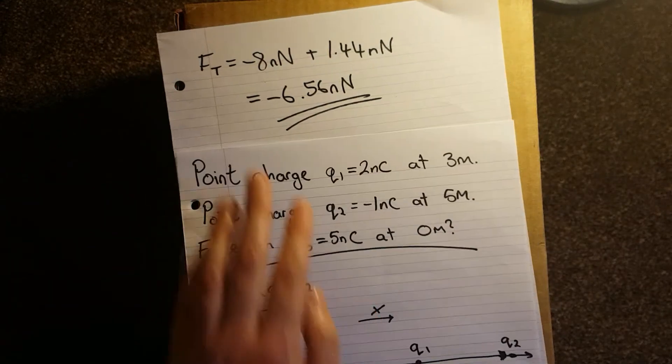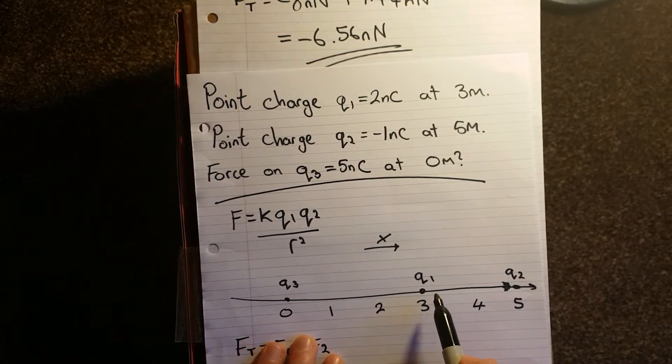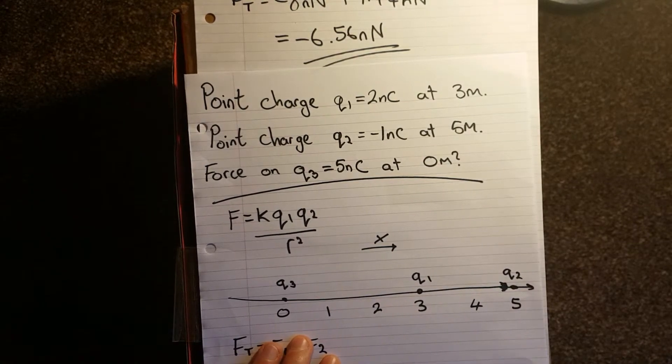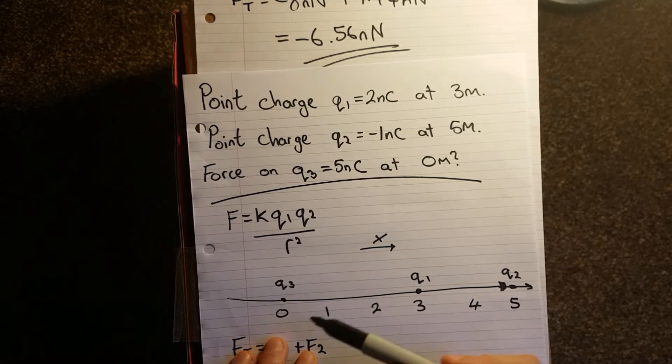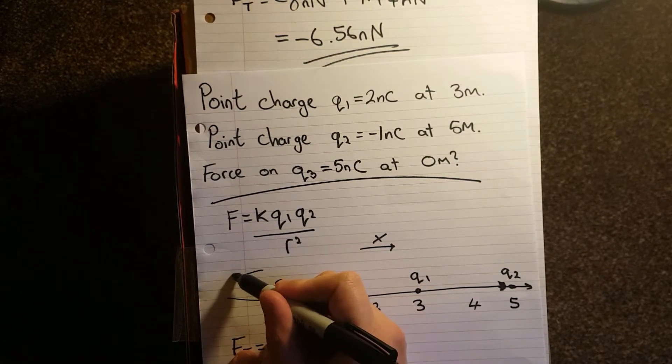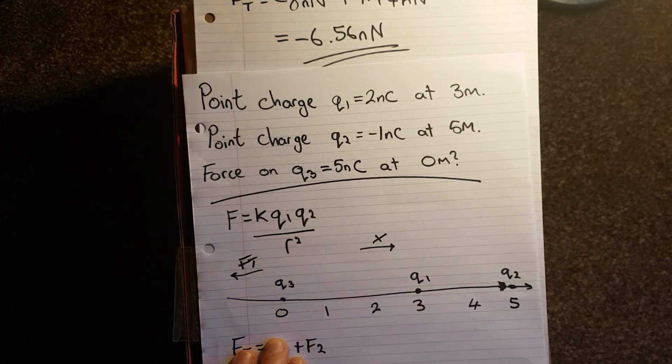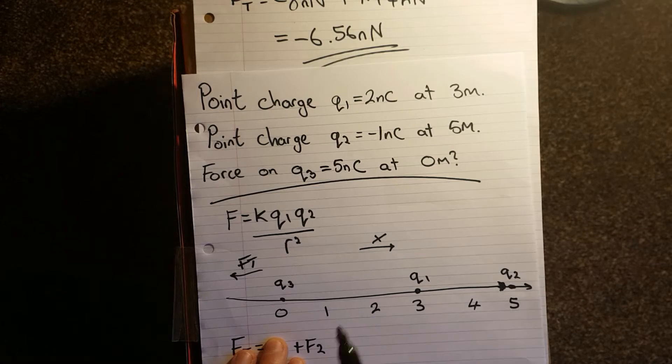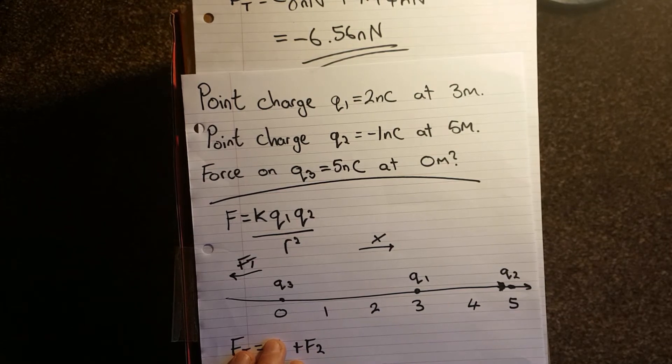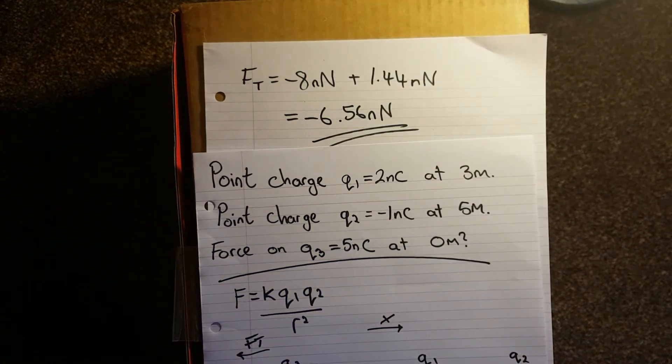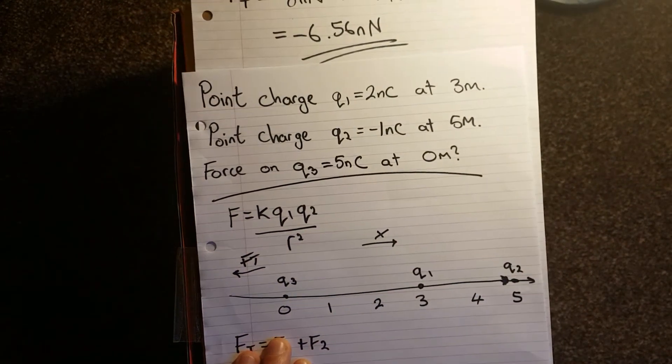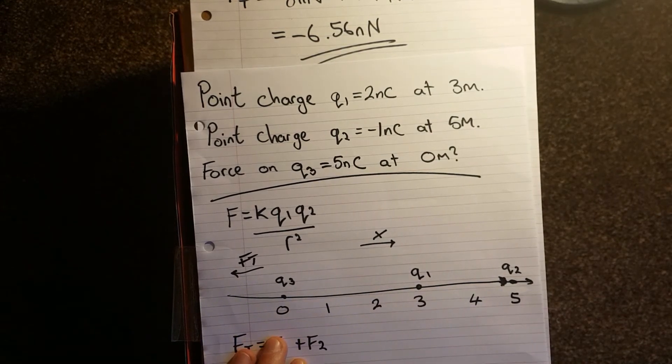But this does make sense, as there is a strong charge. This Q1 is stronger than Q2 in terms of strength. It's going to repel Q3, and it's closer. So overall, Q3 is going to move this way, with total force. But it's not going to move with the total might of Q1, due to the small attractive nature of Q2. So therefore, the 8 is taken away by the 1.44, and you get minus 6.56 nano newtons, in the opposite of the x direction.